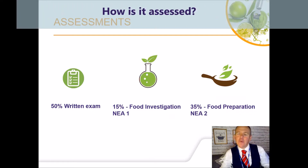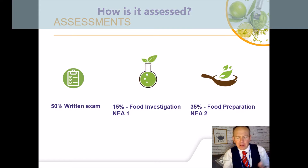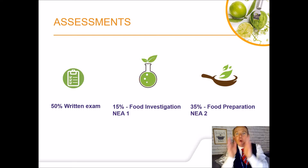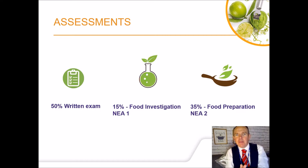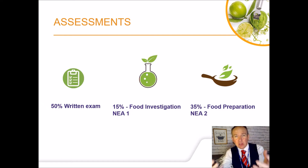Now how do we assess it? You've got your traditional written paper that makes up 50%. Then you've got the other 50% which is broken down into what we call a non-examination assessment, or NEA. That's the practical element, split between 15% which is a food investigation task and 35% which is the actual food practical making task — traditionally what you think of with food GCSE.